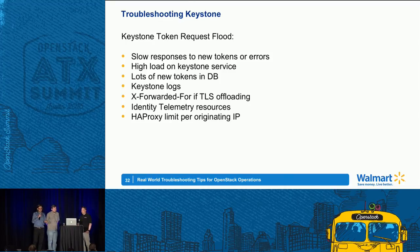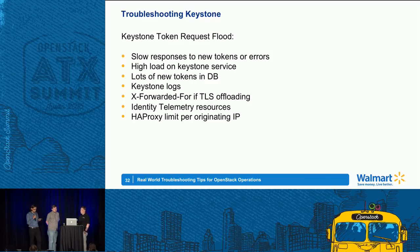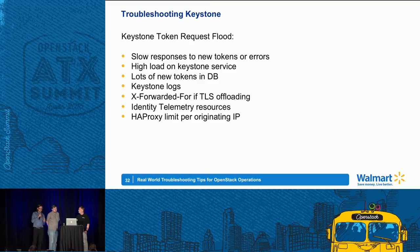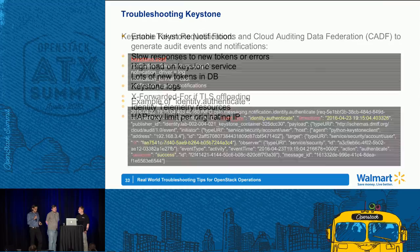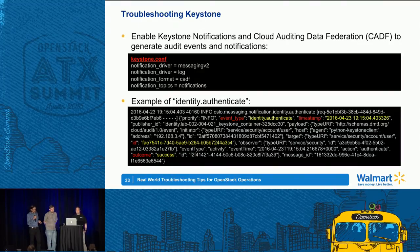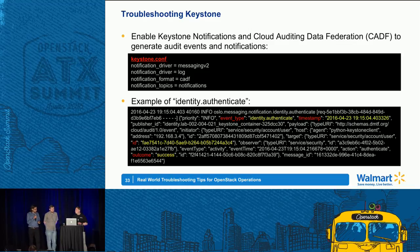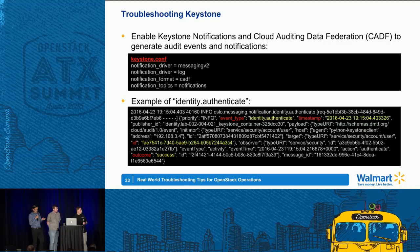Another thing you can do is use telemetry services enabled for your identity service — you can go into the metrics information and find out who is actually hammering Keystone. One way to mitigate that is to put a limit on how many requests can come in from a particular IP address on your load balancer. Cloud Auditing Data Federation (CADF) is a standard for all OpenStack services to do auditing and logging. If you enable this with Keystone, the configuration shows some things you need to enable in your Keystone configuration file, and this gives you tons of information about Keystone. You can also use this for other services, obviously.